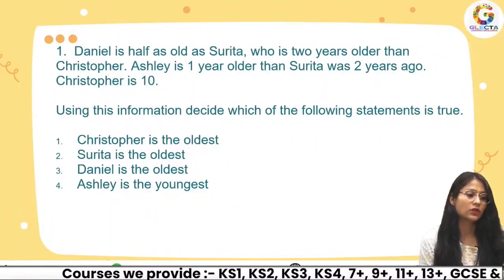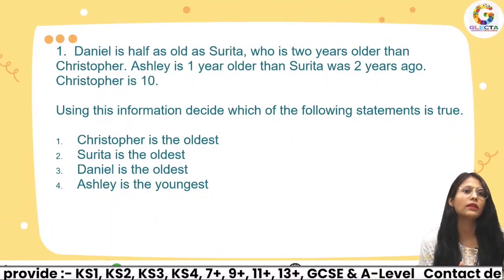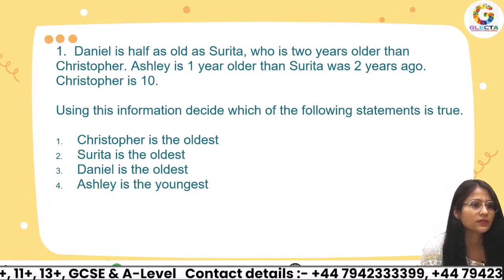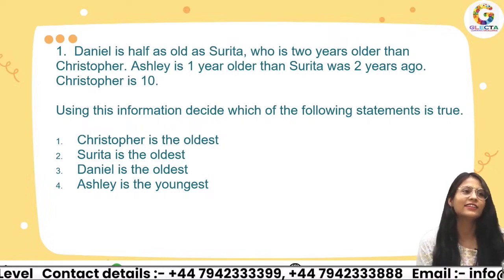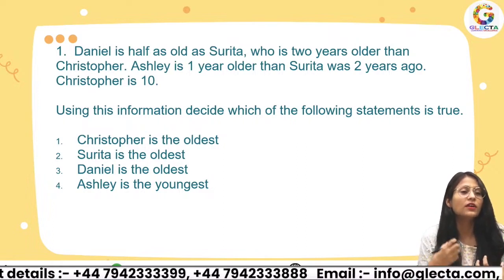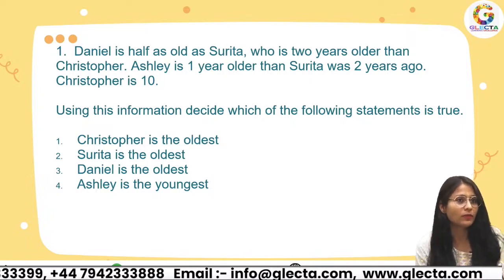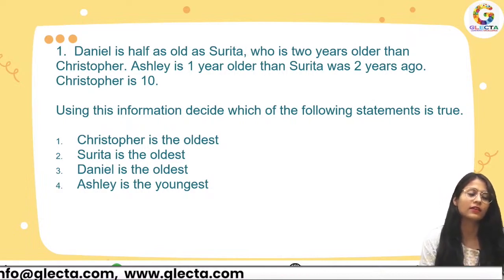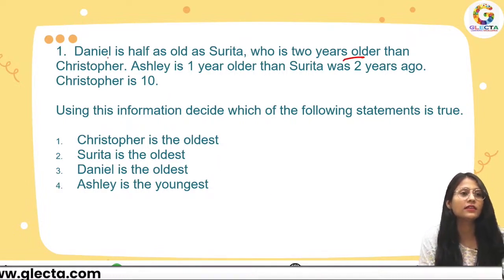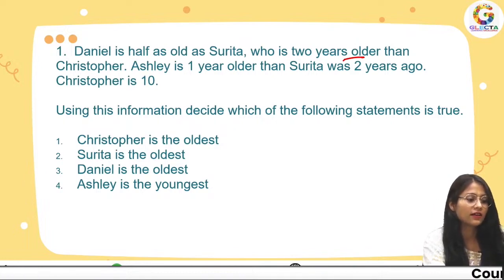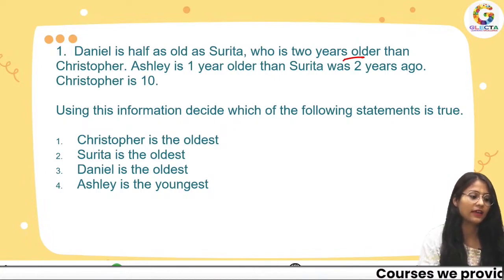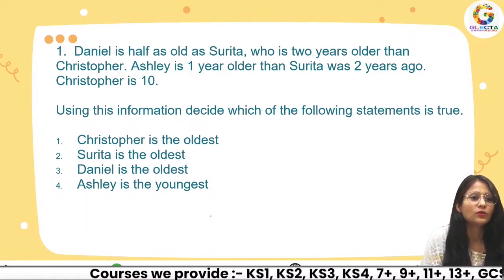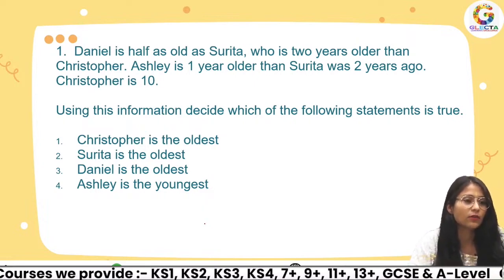Moving on to question number one on the screen. Please look at question number one — it tries to give you useless information to confuse you. You have to be careful while reading. The question says: Daniel is half as old as Sarita. Please send me your answers in the chat box.